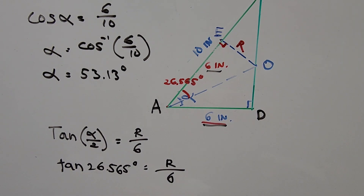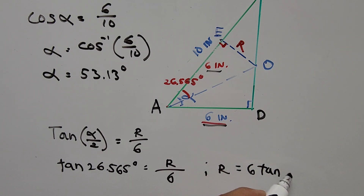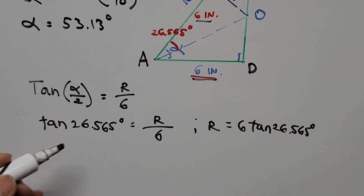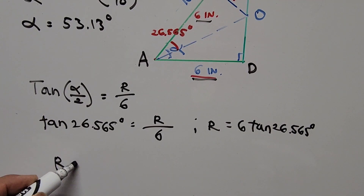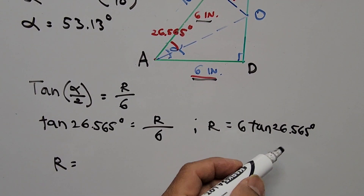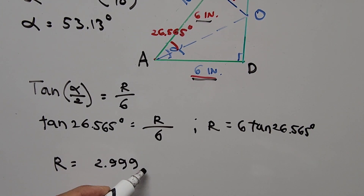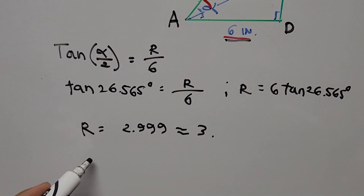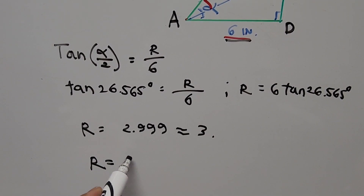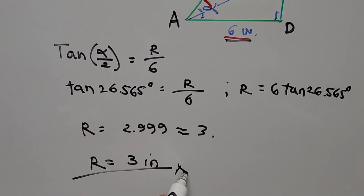Taking the value of R: R is equal to 6 times tangent of 26.565 degrees, which equals 2.999, and this is equal to 3. So R equals 3 inches — that is our final answer.